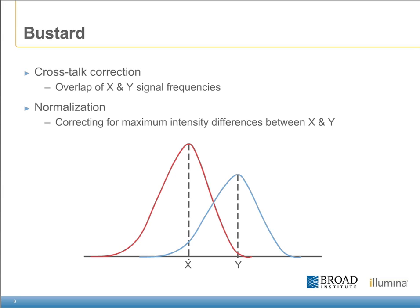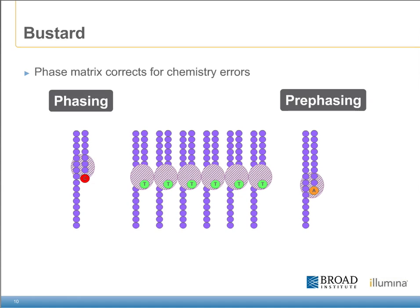Besides crosstalk, there is also normalization for the maximum intensity differences between each of the dyes. Bustard also tries to make a correction based on the phasing or pre-phasing that happens within the chemistry. Due to minor inefficiencies in the chemistry, it's possible for a small number of molecules that make up a cluster to be either a base ahead or a base behind the current incorporation cycle. These molecules that are out of phase with the majority can account for an additional signal. The software uses a number of algorithms to correct for this phasing or pre-phasing signal.